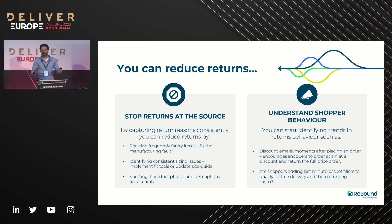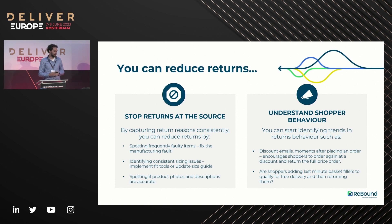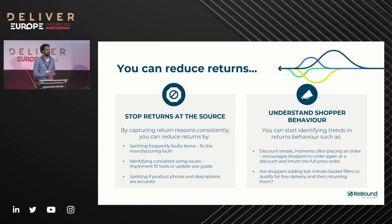Rebound is excited about returns, but we're also here to reduce unnecessary movements and stop them at the source. You can also use the data to understand shopper behavior. All the return orders coming through our systems will have flags — like whether it was bought at a discount, or by a VIP or premium customer. By flagging that, you can see whether VIP customers are returning more or less in certain markets, and use that data to target those consumer groups.